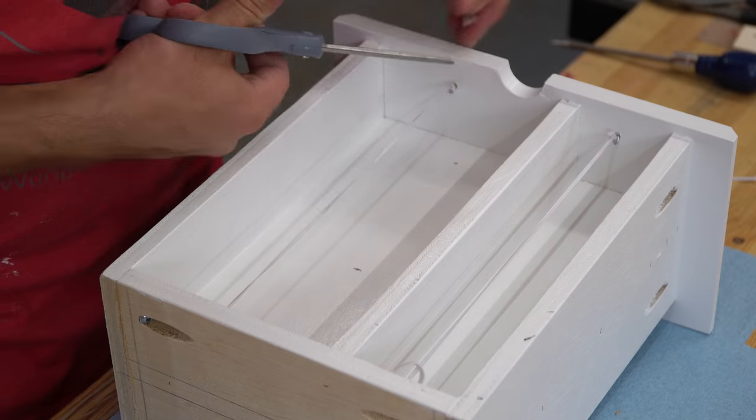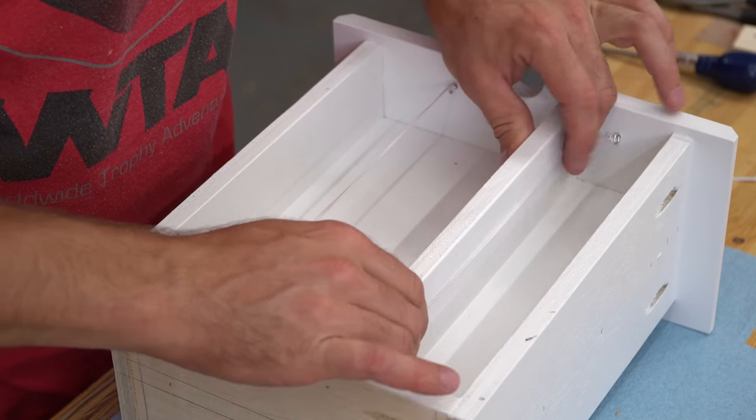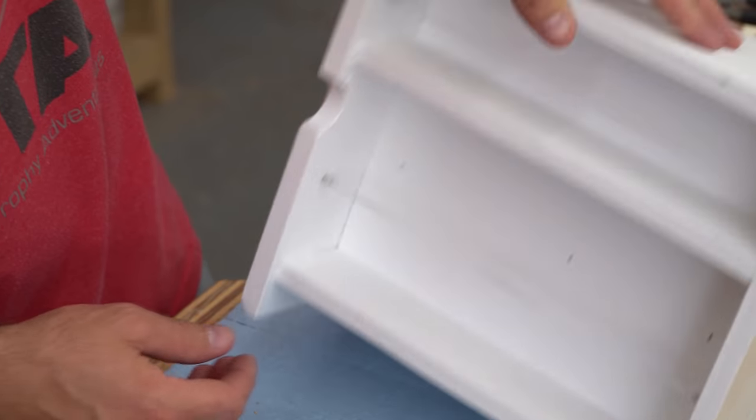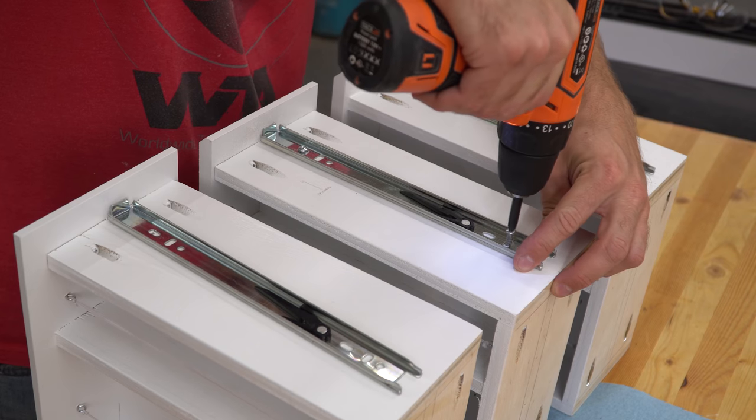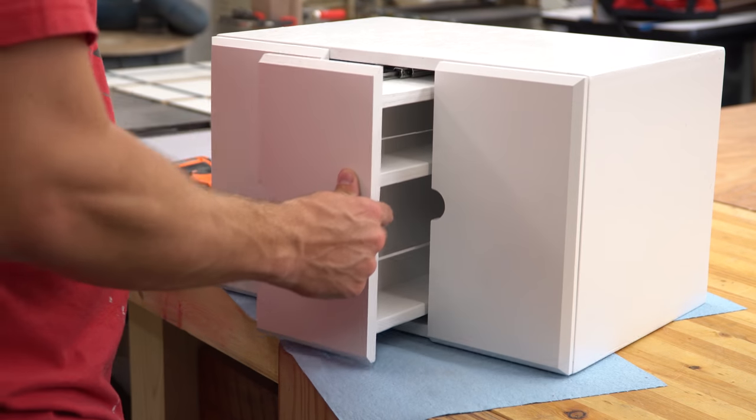They don't have to be very strong because all the forces on these drawers are moving front to back. These are more of a precaution just in case you have an overzealous chef in the kitchen who needs a tablespoon of coriander in a big hurry. I reinstalled the slide hardware onto the drawers and to the cabinet body then slid all the drawers in place to check out the finished project.